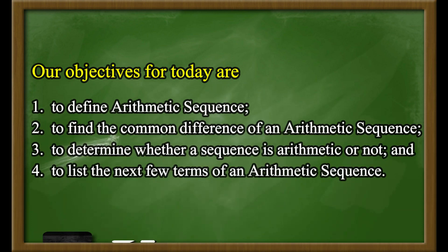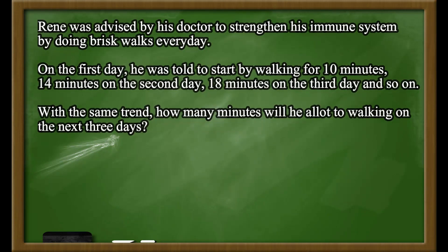We will start with an application of an arithmetic sequence. Rene was advised by his doctor to strengthen his immune system by doing brisk walks every day. On the first day, he was told to start by walking for 10 minutes, 14 minutes on the second day, 18 minutes on the third day, and so on. With the same trend, how many minutes will he be allowed to walk on the next 3 days?